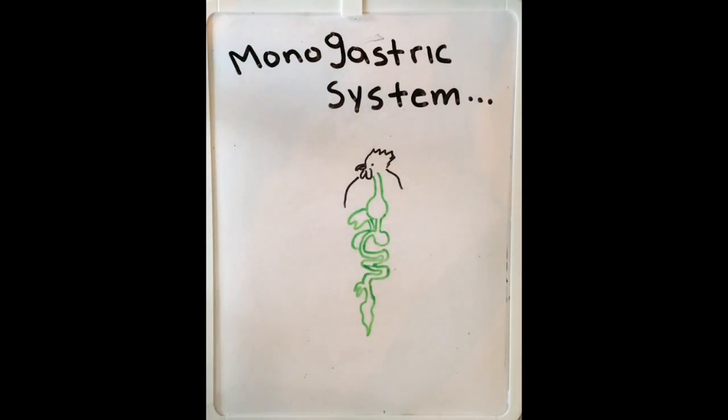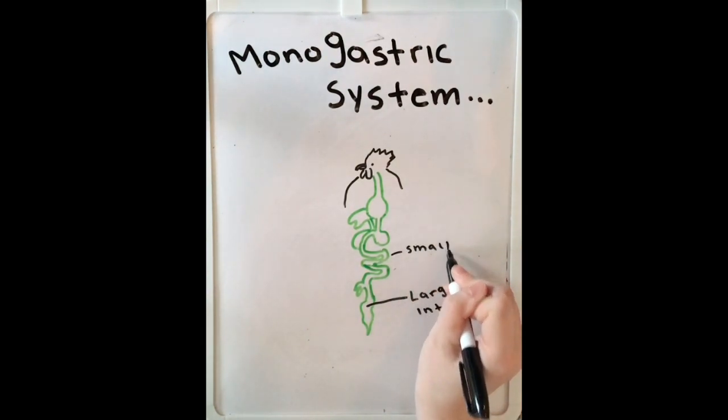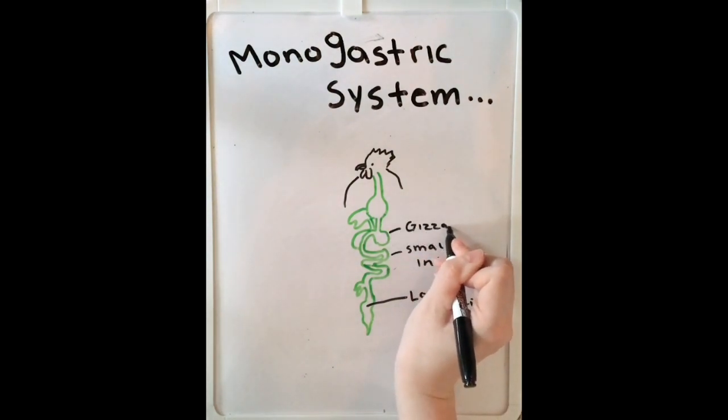And the next difference that you'll see is the gizzard, which is often referred to as the mechanical stomach. The gizzard is made up of two sets of very strong muscles that act as the bird's teeth, and it has very thick layers that protect the muscles.